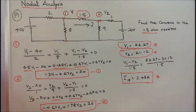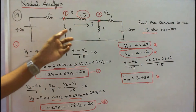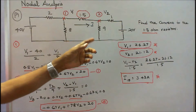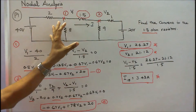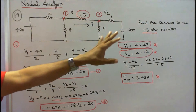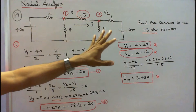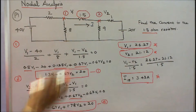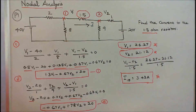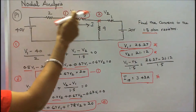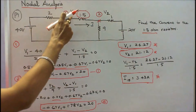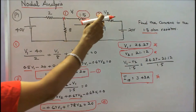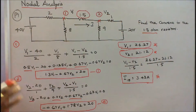Problem number 1. Five resistors and 2 voltage sources are connected as shown in the figure. Find the current in the 1.5 ohm resistor. This circuit has 2 nodes: node 1 with node voltage V1, and node 2 with node voltage V2. First we have to write the nodal equation.